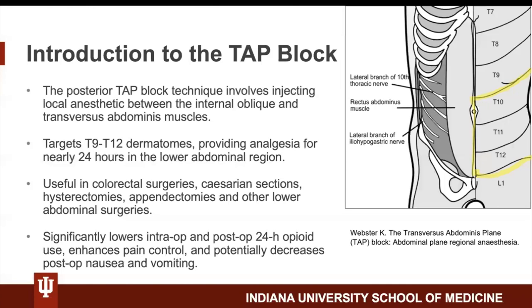The posterior TAP block technique involves injecting local anesthetic into the fascial plane between the internal oblique and transversus abdominis muscles bilaterally. This is done to target the lateral cutaneous nerves along the T9 to T12 dermatomes, with the goal of providing analgesia for around 24 hours.